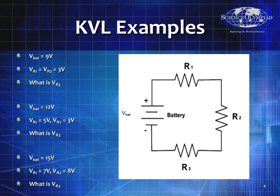KVL example: if the battery is 9 volts and V_R1 and V_R2 are both 3 volts, what's V_R3? It has to be 3 volts because V_R1 + V_R2 + V_R3 must equal V_battery. So 3 + 3 + x = 9; subtract 6 from both sides and V_R3 = 3 volts. Now with a 12-volt battery, R1 = 5 volts and R2 = 3 volts: 5 + 3 + x = 12, so V_R3 = 4 volts.